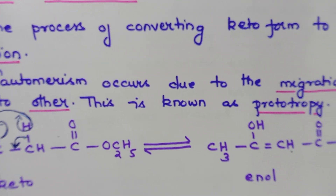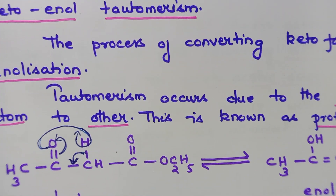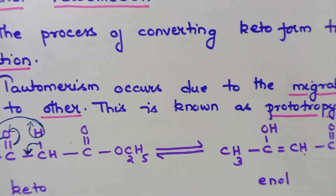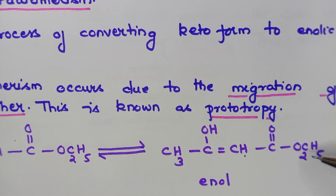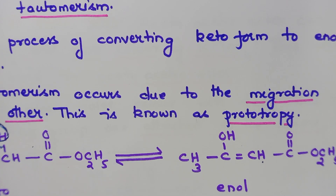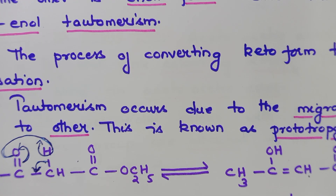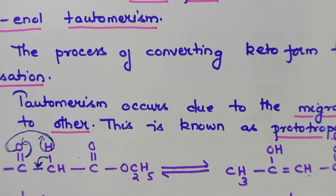Check whether the enolic form is correct: CH₃–C(OH)=CH–C(=O)–OC₂H₅. This is the enolic form. So to summarize: what are tautomers, what is tautomerism, what are the two isomeric forms (keto and enolic), what is enolization, and how tautomerism occurs — these are the main points under tautomerism. Now let us see the evidences for the keto and enolic forms in acetoacetic ester.